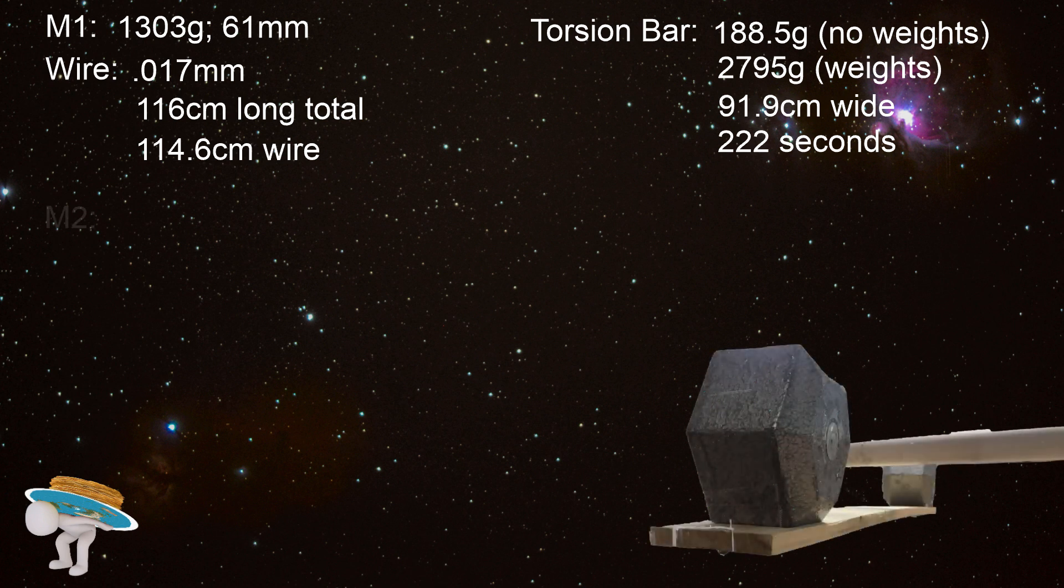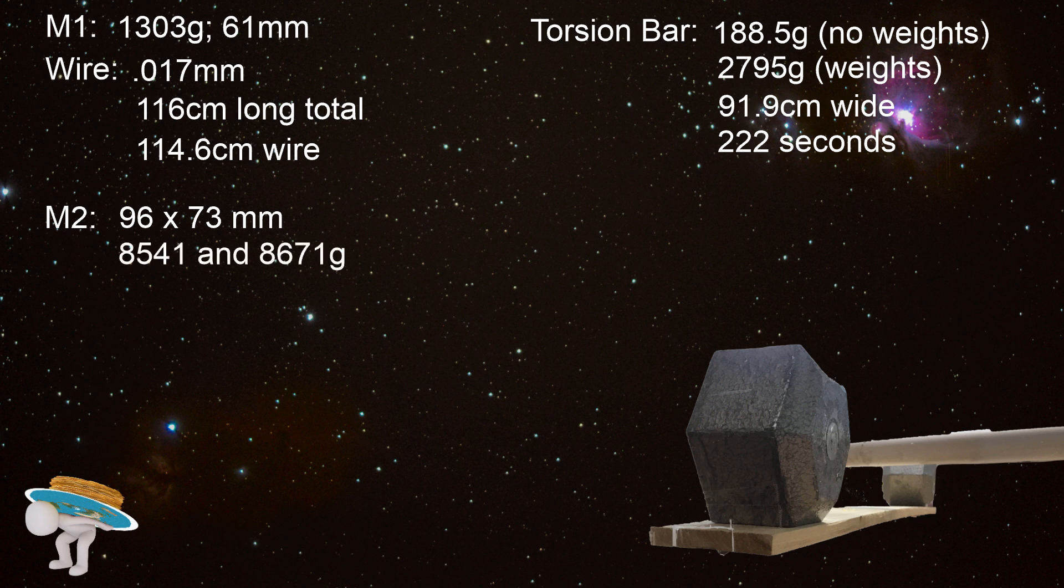The large weights, or M2, were 96 millimeters by 73 millimeters, and 8,541 grams and 8,671 grams. When I began measuring M2, I was struck by the great difference between the two even though I removed the bar handle from the same spot on the interior.